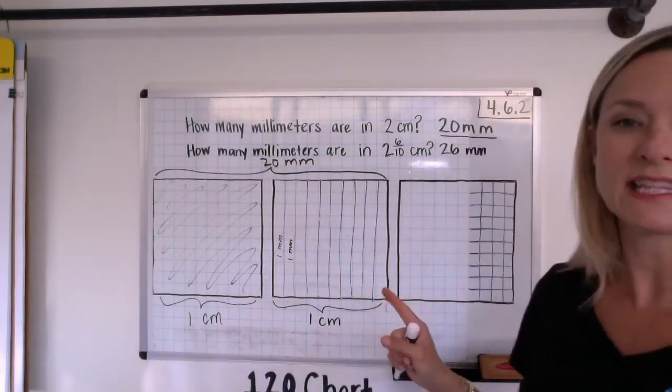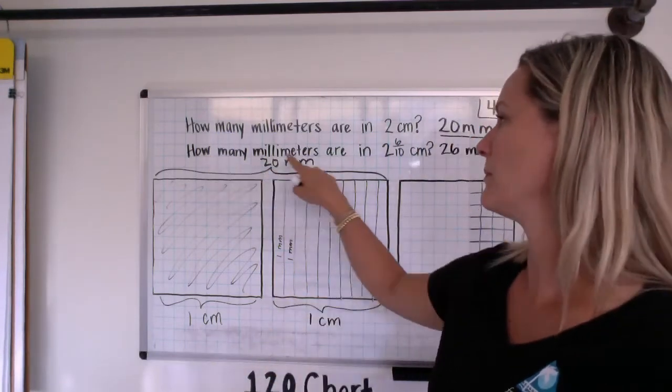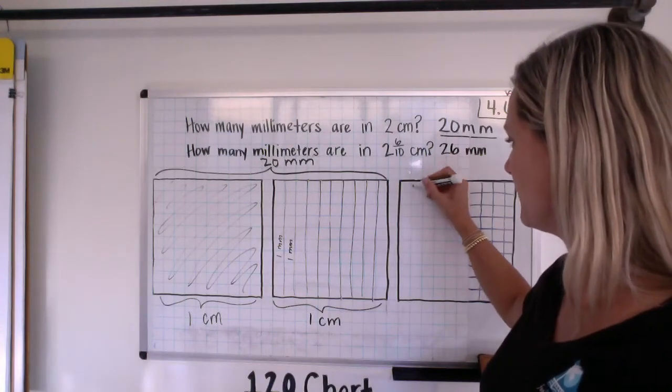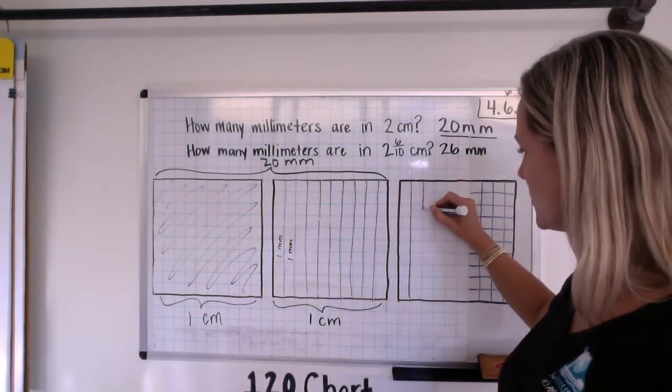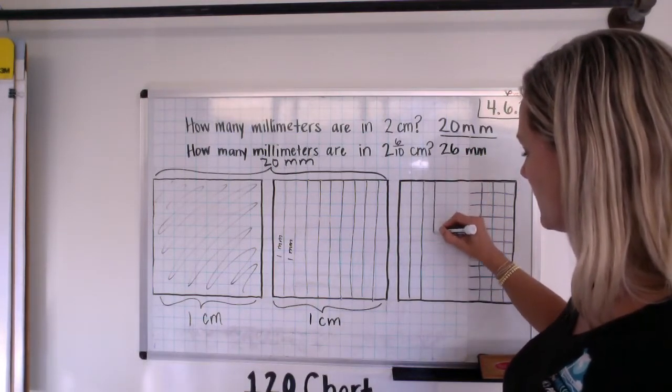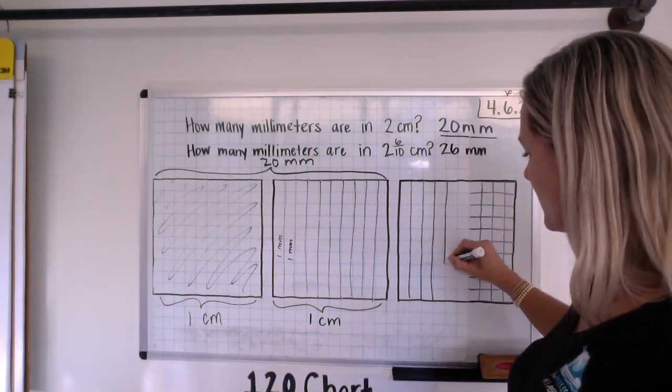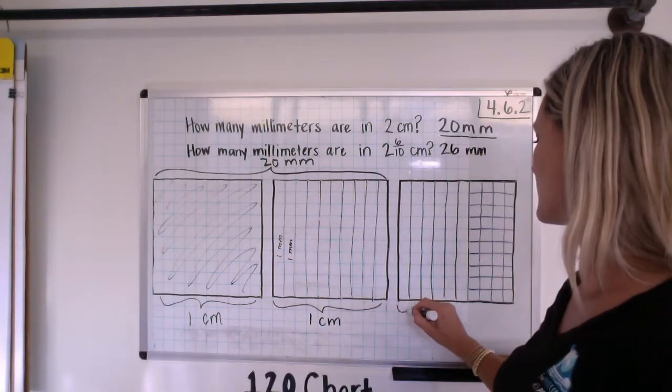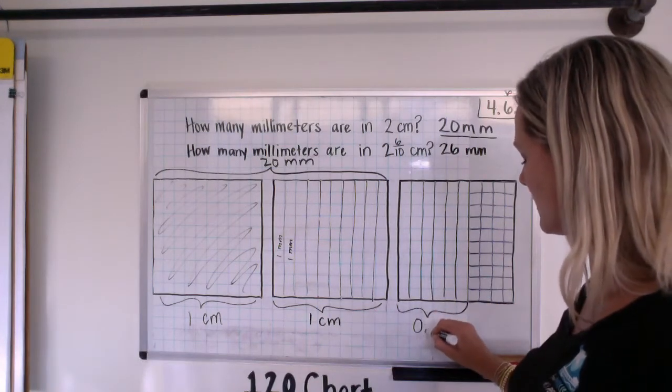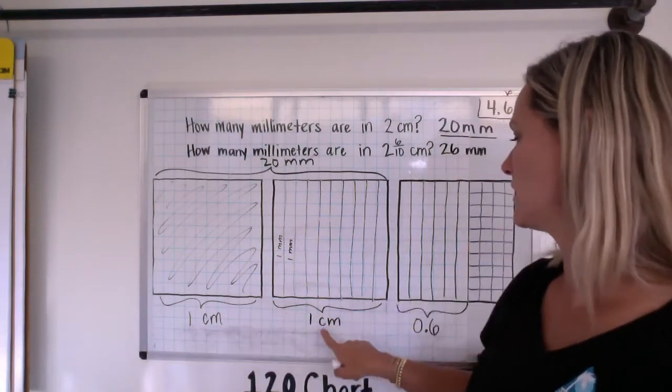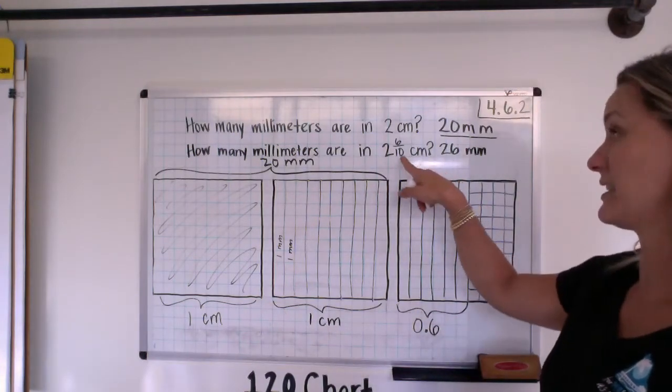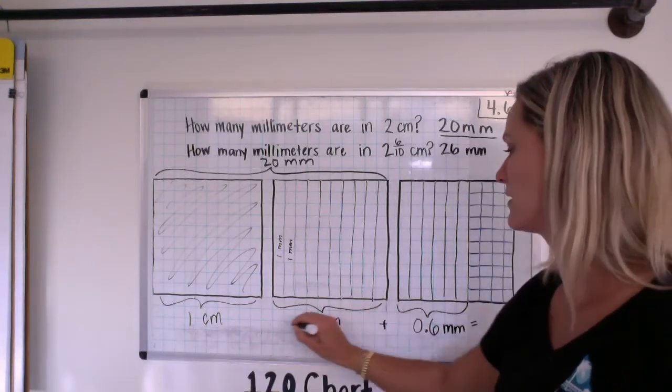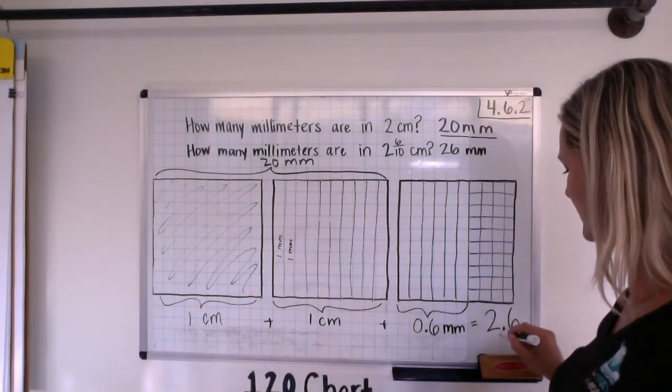And then, we only needed the 6 millimeters for the last part. For this, how many millimeters are in 2 and 6 tenths centimeters? Well, then we would just fill in the final six. So, that's 1 millimeter, 2 millimeters, 3 millimeters, 4 millimeters, 5 millimeters. And the last one, 6 millimeters. So, this is 1 centimeter plus another centimeter plus 6 tenths, otherwise known as that fraction right there, 6 tenths millimeters, equals 2 and 6 tenths centimeters.